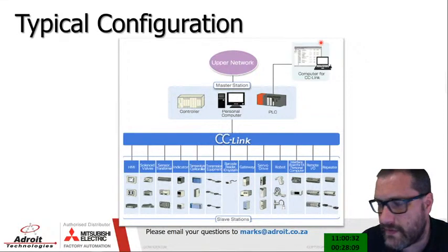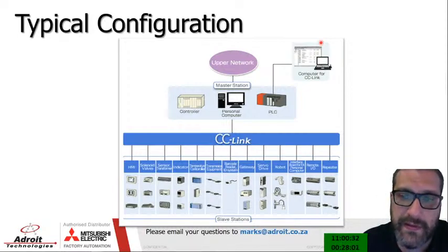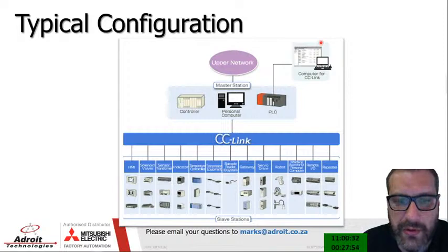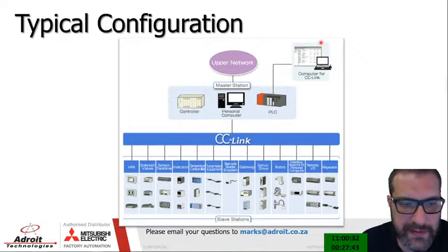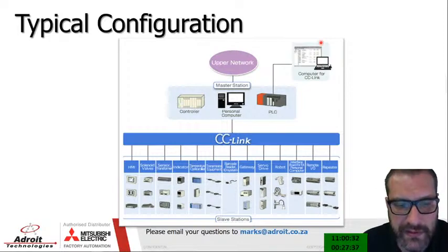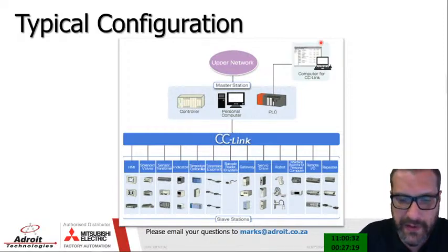In a typical CC Link configuration, the upper network includes a CC Link computer — basically a PC used to set up CC Link. Below that, the master station can be any controller, even a personal computer or a PLC, which then communicates down to the CC Link network. CC Link can communicate with a wide range of devices: HMIs, solenoids, sensors, sensor transformers, indicators, temperature controllers, transmission equipment, barcode readers, gateways, servers, drives, robots, PC interfaces, remote IO, and repeaters.